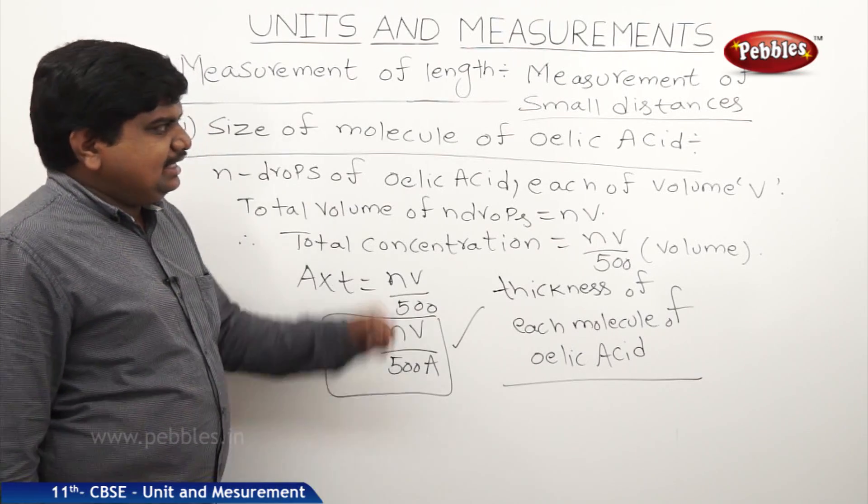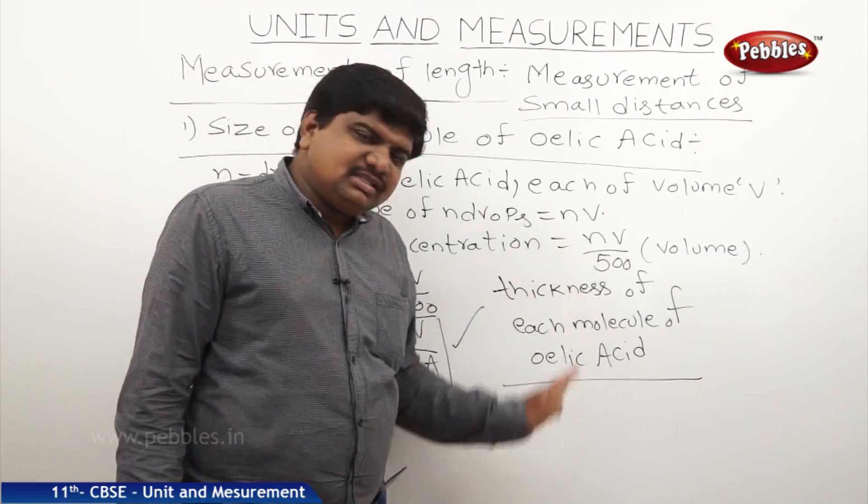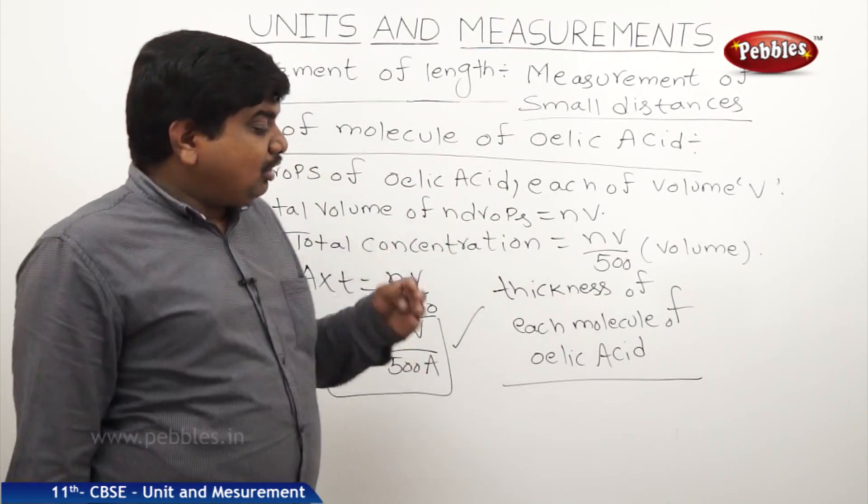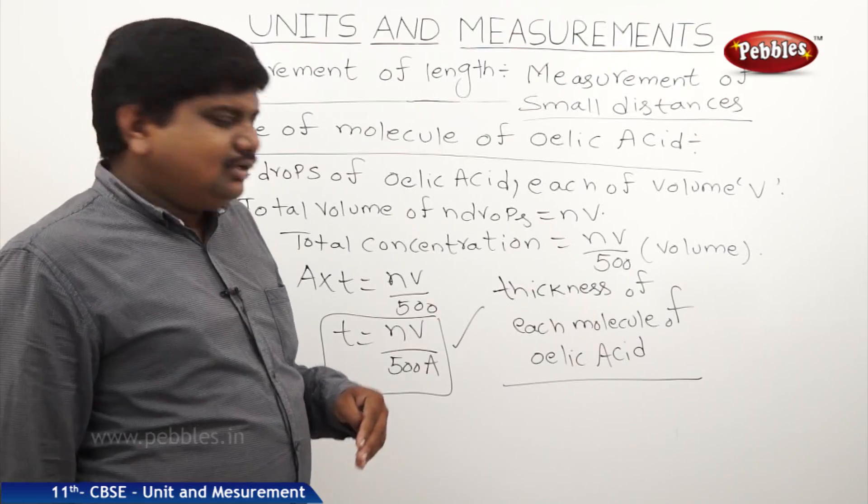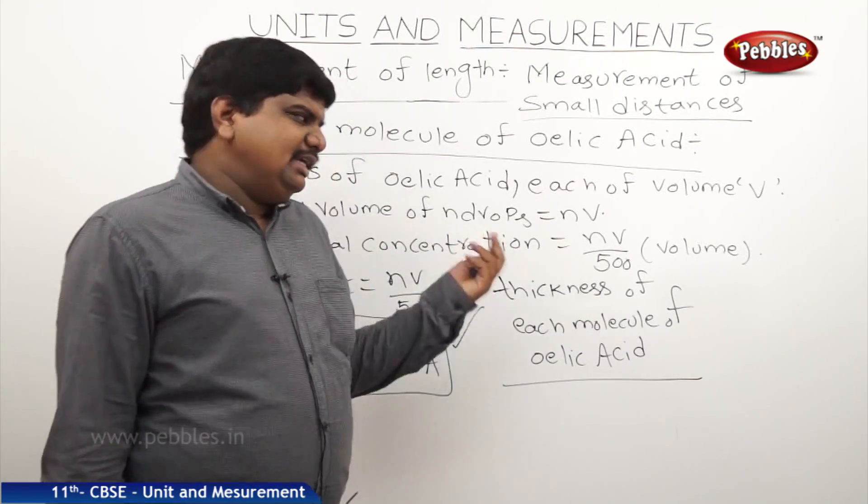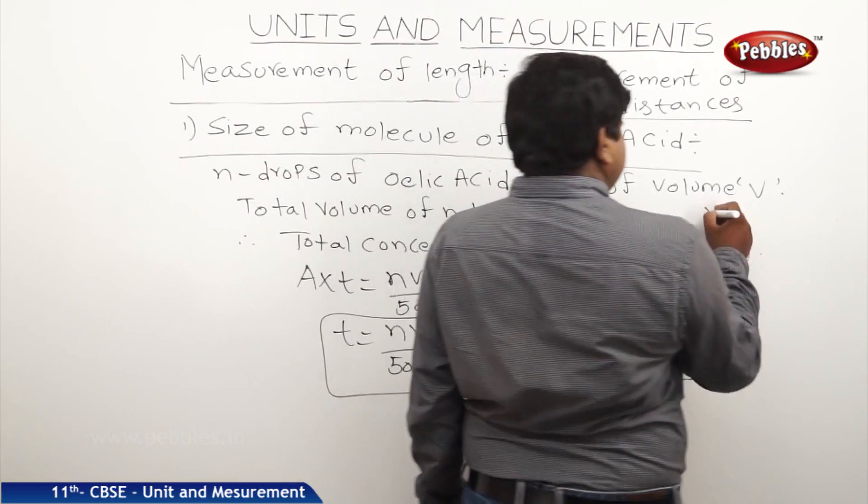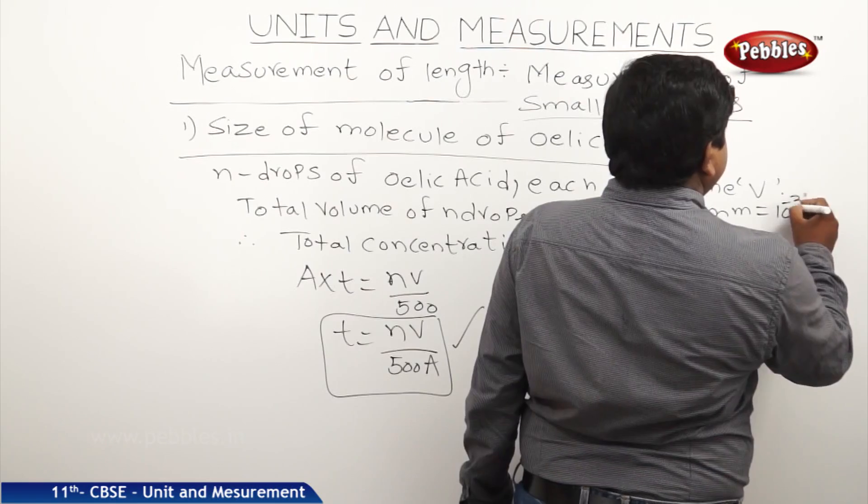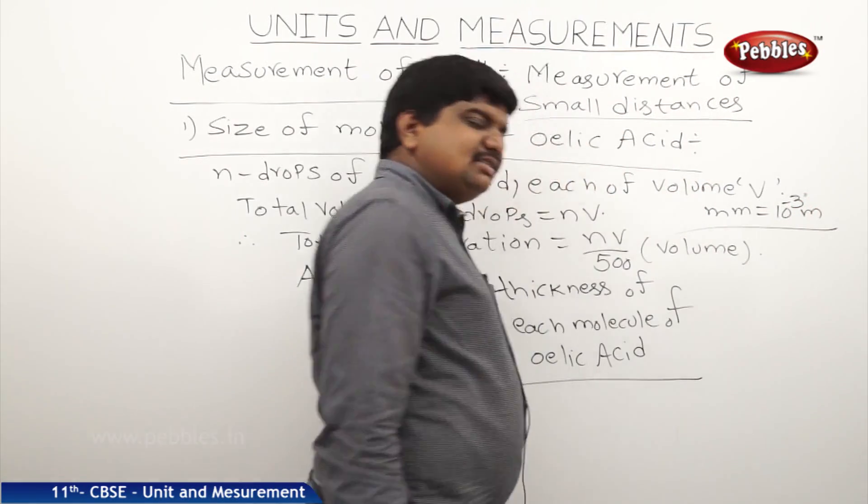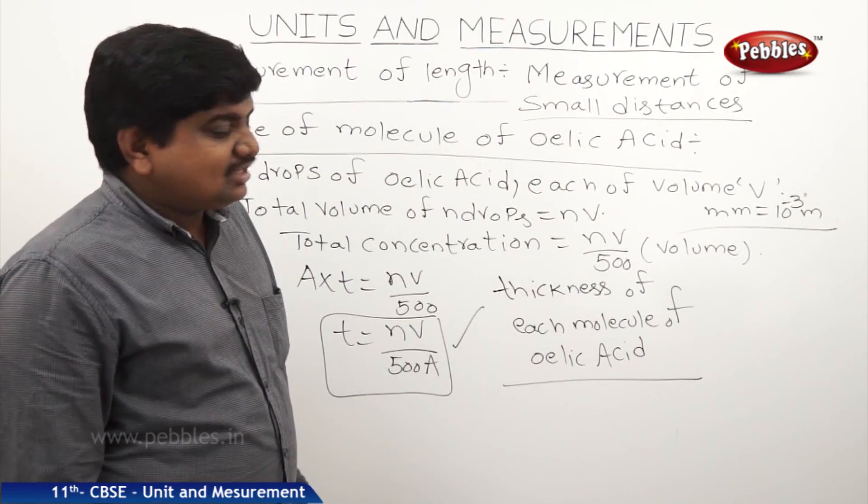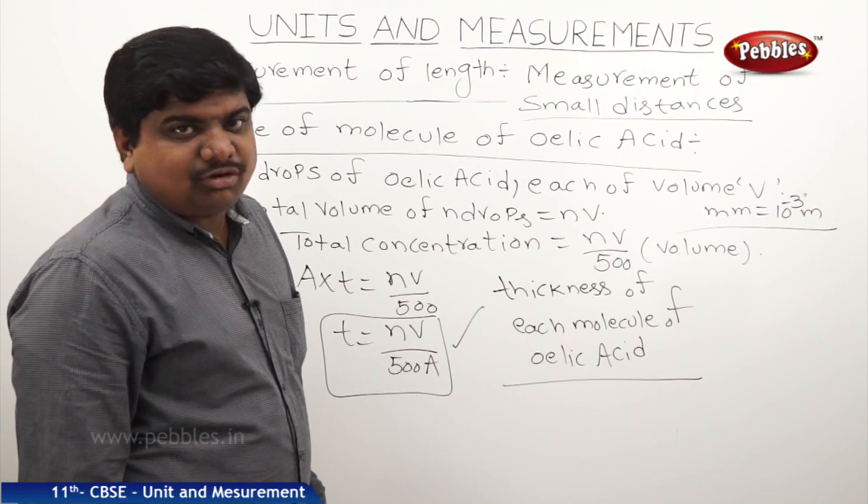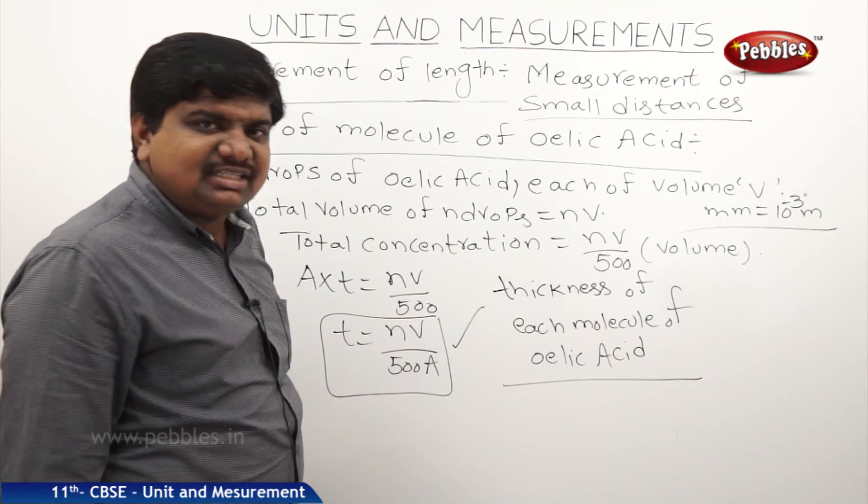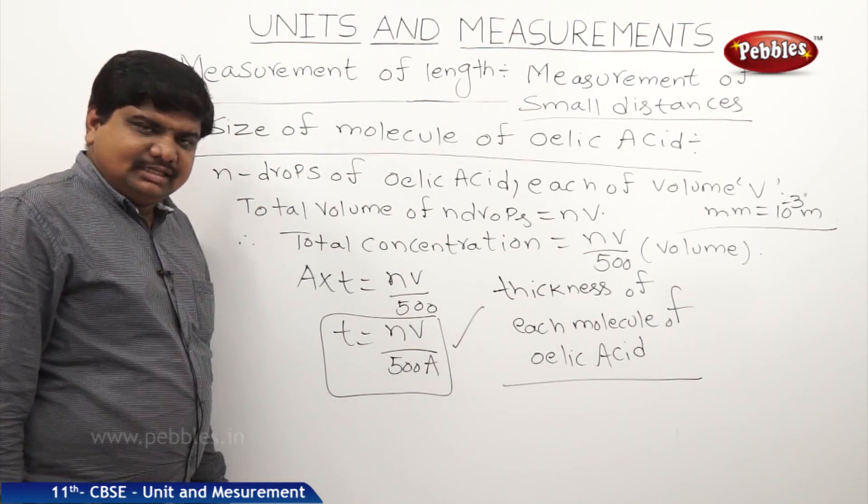So like this we can find small distances, the small sizes which are 10^-3, 10^-4, 10^-6. The minimum length that can be observed by human beings is centimeter, millimeter, 10^-3. Beyond that is very difficult to observe. But we have 10^-6 meters which is micro, 10^-9 nano, 10^-10 angstrom. To measure this, this measurement of small distance is useful.